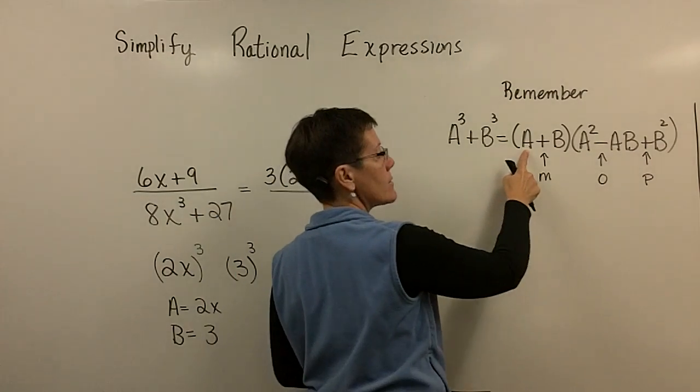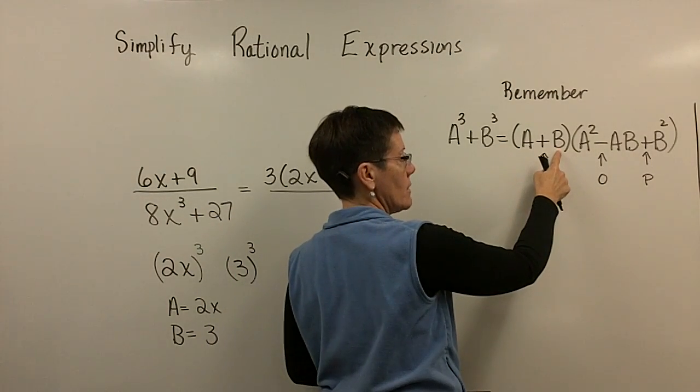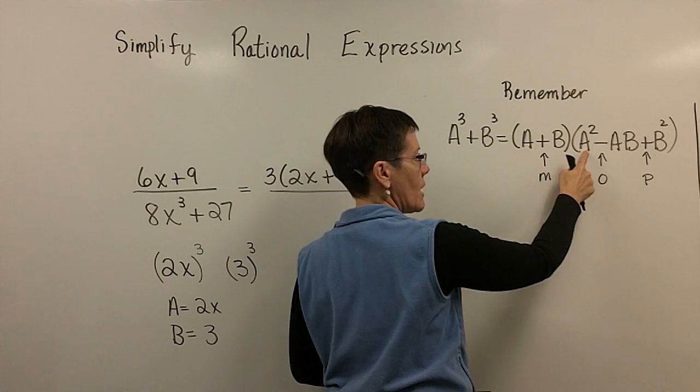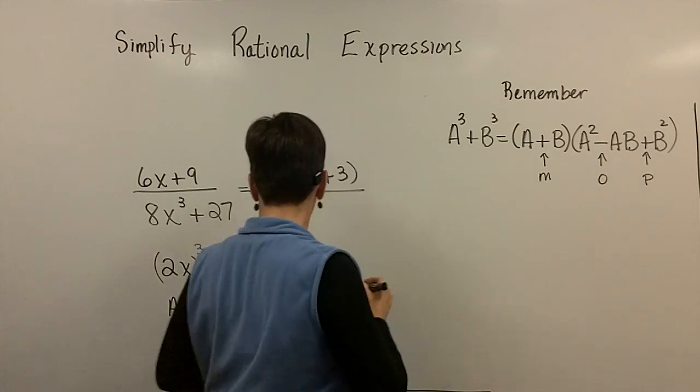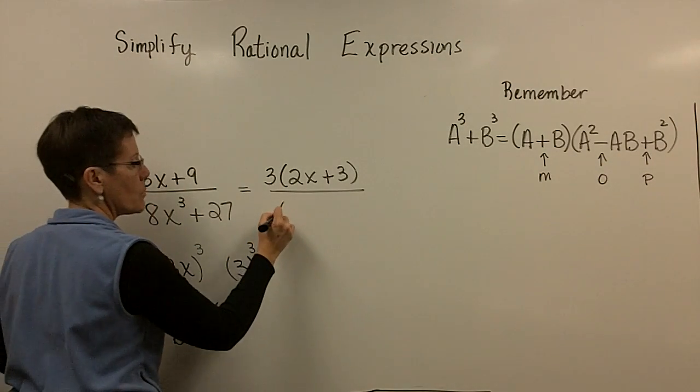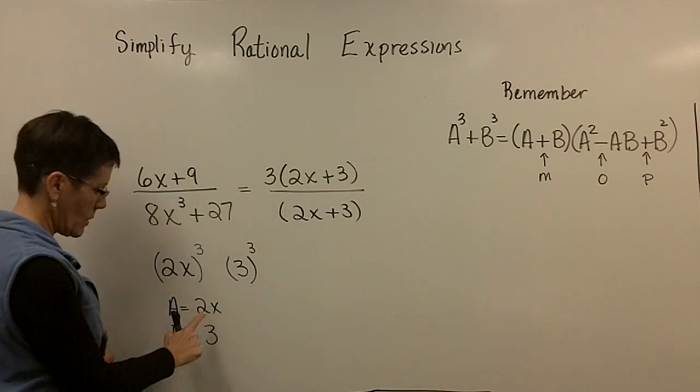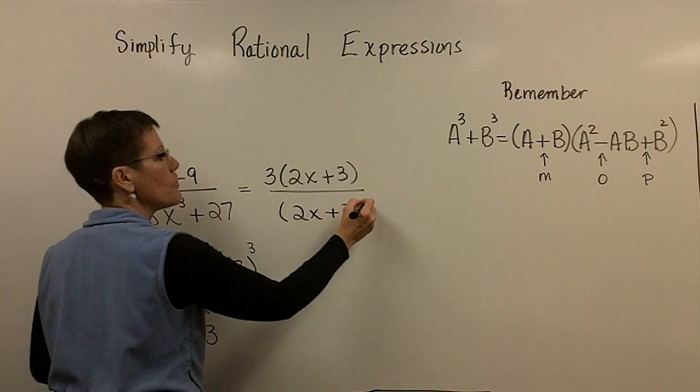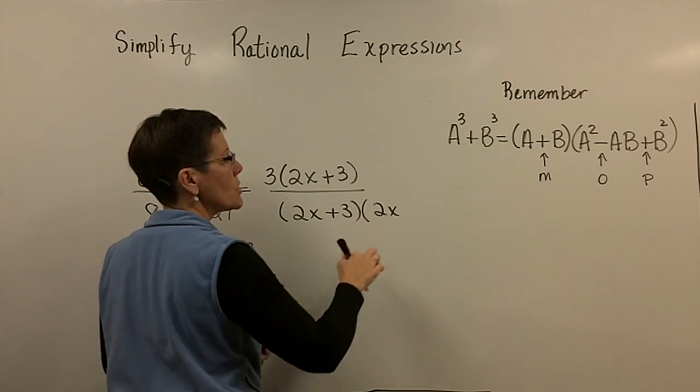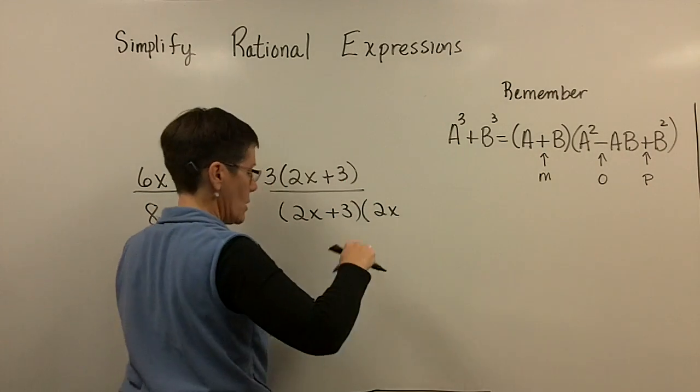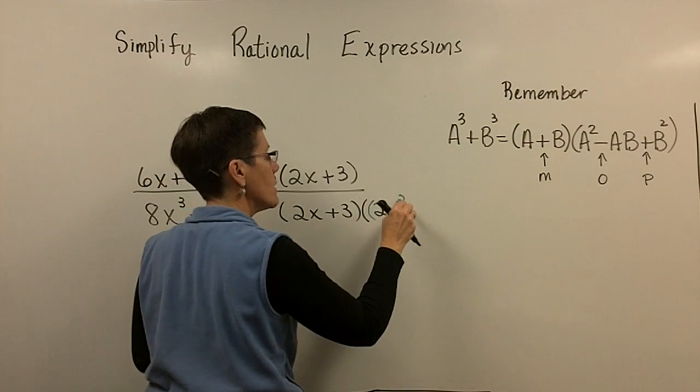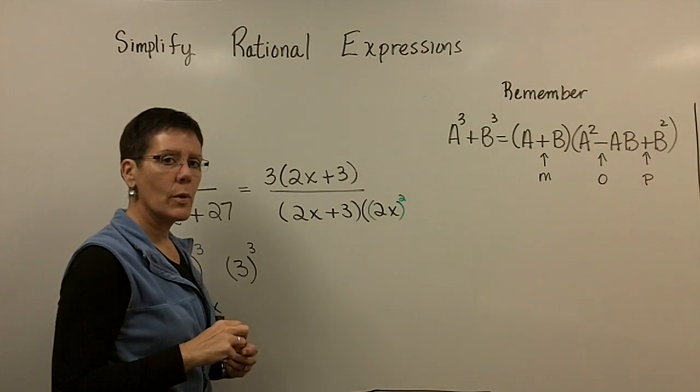Now you just stick the 2x and the 3 in here, anywhere you see a and b. So it's pretty easy for the binomial. The binomial is going to be the a value plus the b value. That's 2x plus 3. But be careful here. You have to take the 2x, which is your a value, and you have to square it. So that's going to be 4x squared.